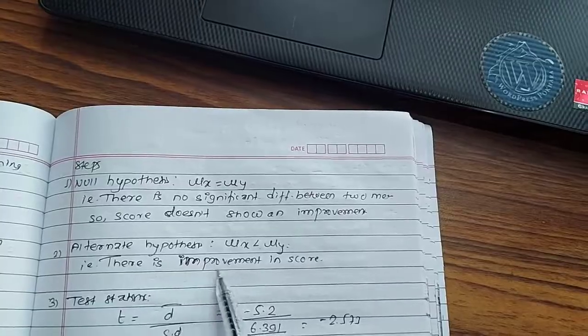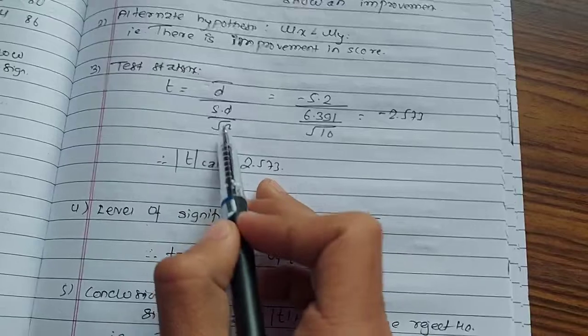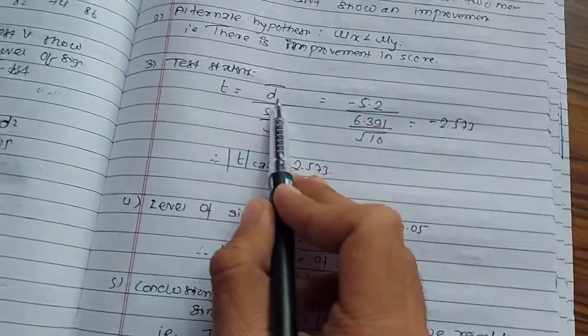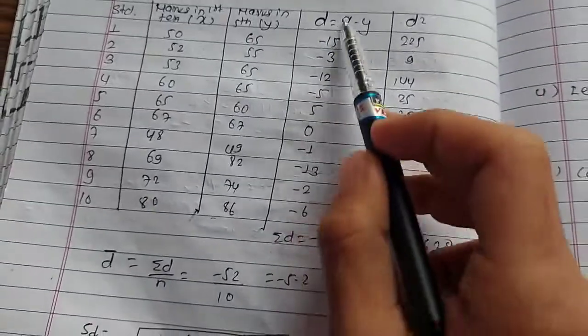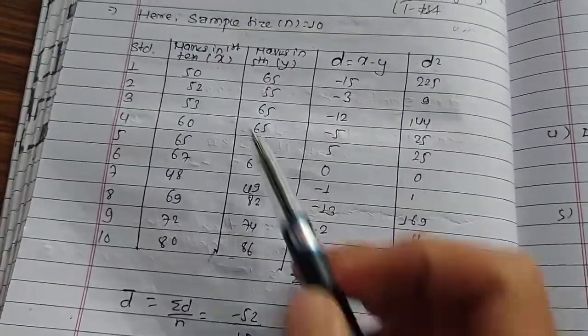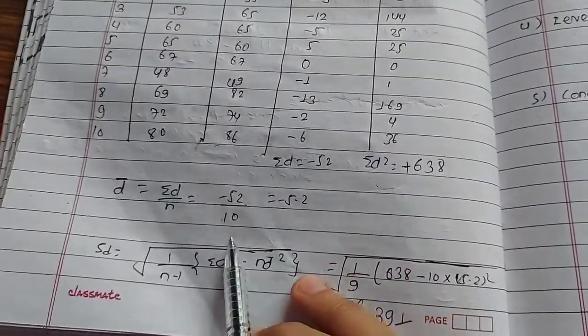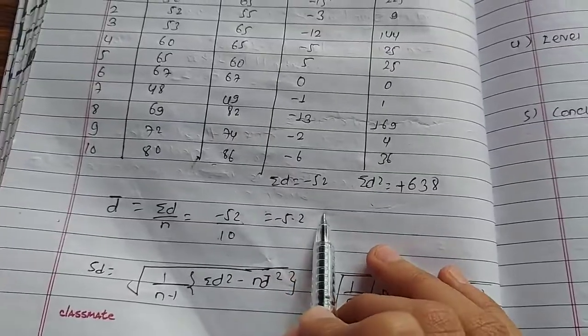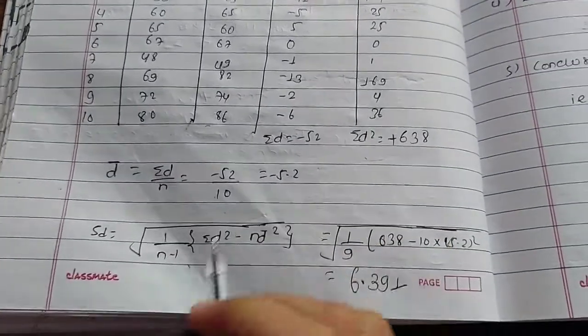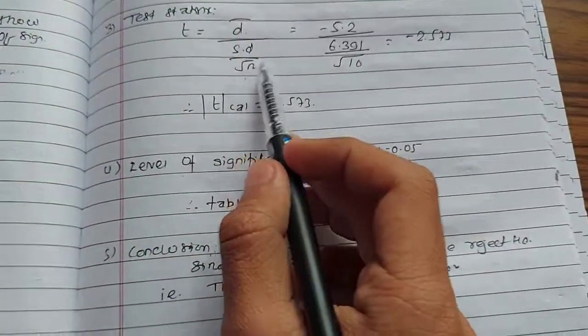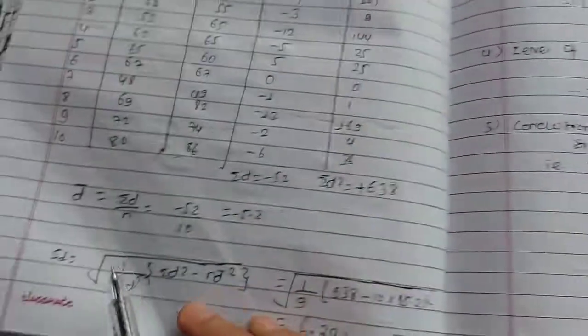Test statistic t equals d bar upon standard deviation of d upon root n. d bar is summation d upon n. Summation d upon n, minus 52 upon 10 equals minus 5.2. Standard deviation, the formula is summation d squared minus n d bar squared upon n minus 1.